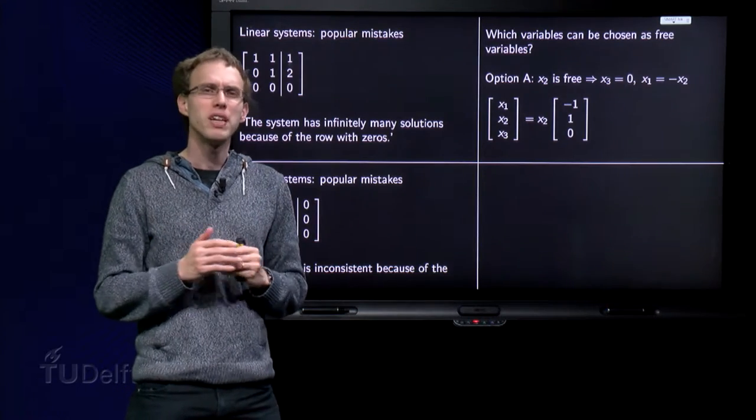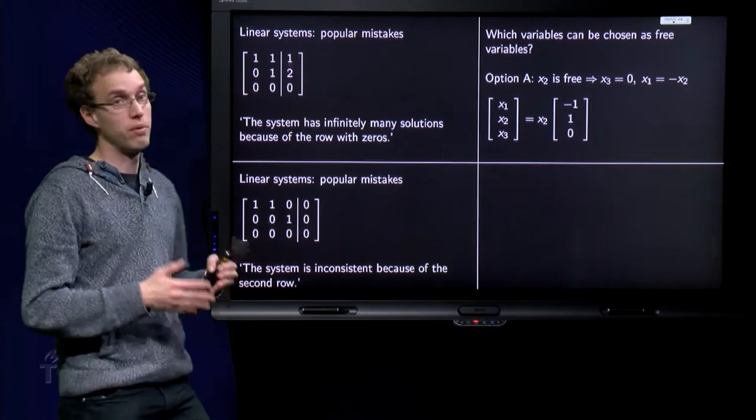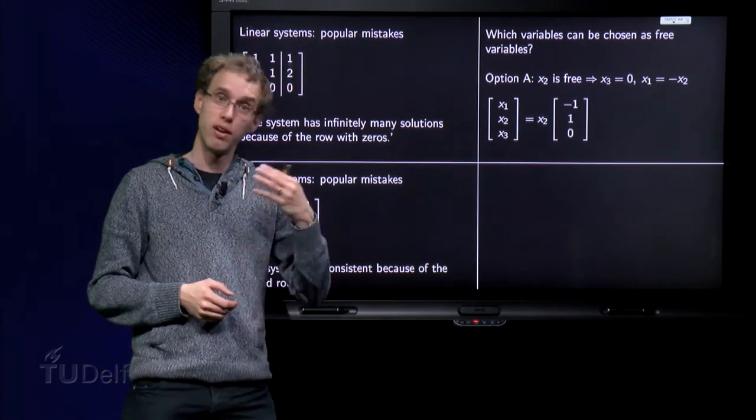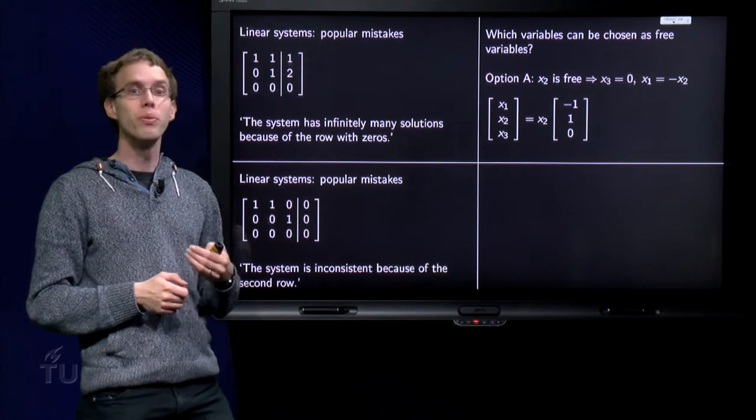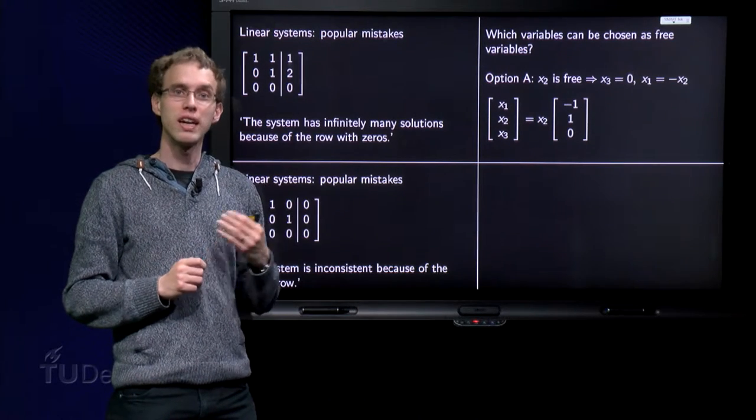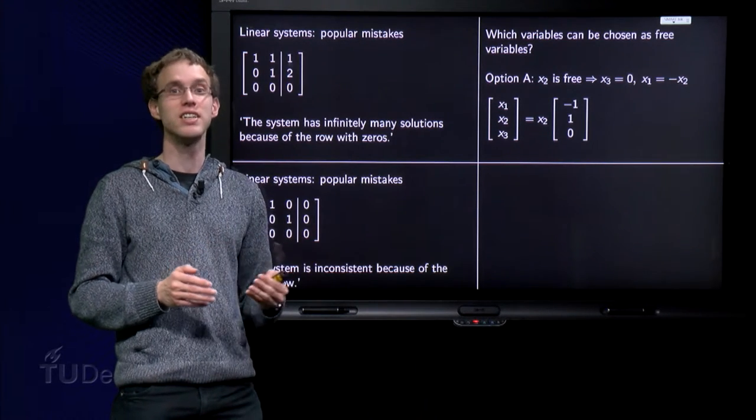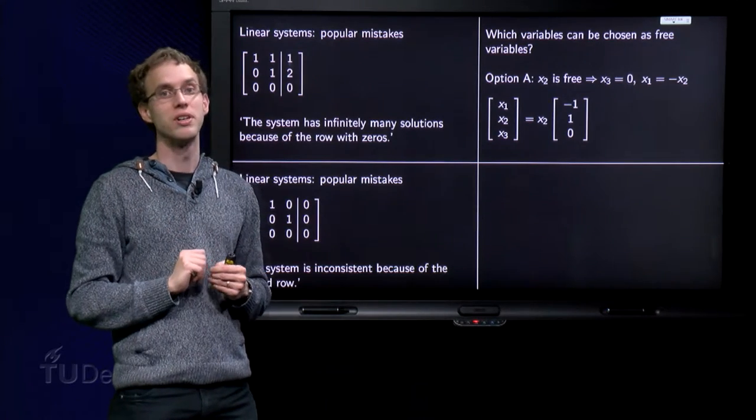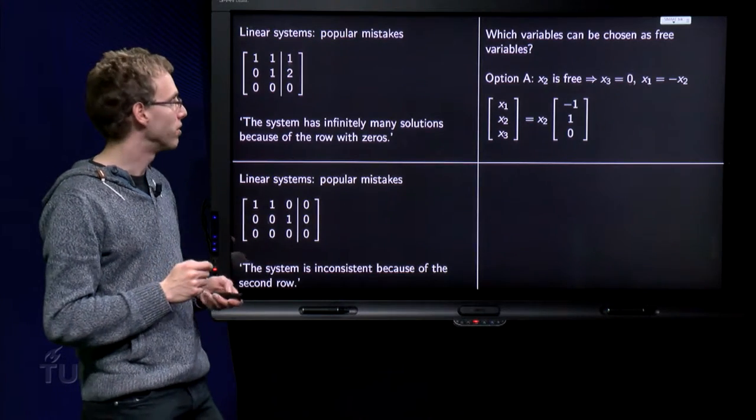You might wonder, what if we would try to choose one of the other variables free? Because, okay, we have three unknowns and two equations, and it's consistent, so I will have one free variable. x2 is free will work. Will one of the other options also work? Can I choose a variable with a pivot as a free variable? The answer is, sometimes you can, sometimes you can't. So, here you need to be careful if you want to choose a variable without a pivot to be a free variable.